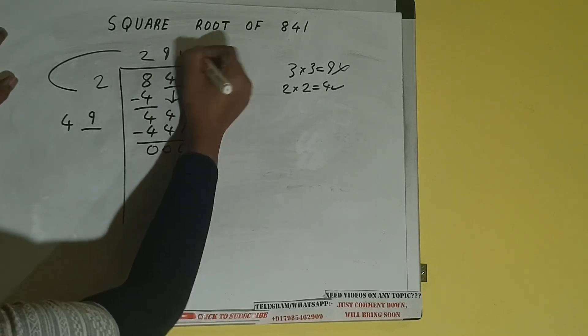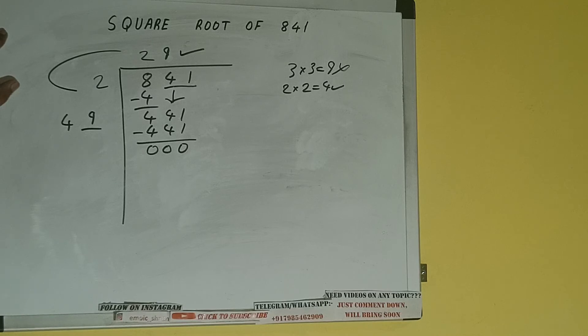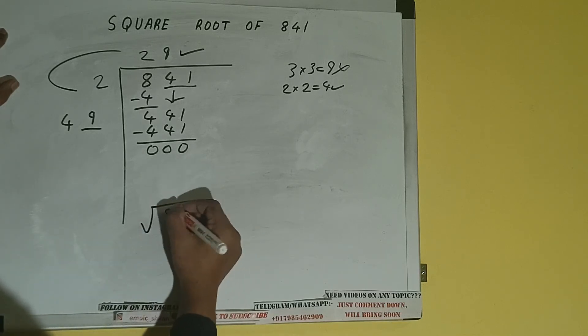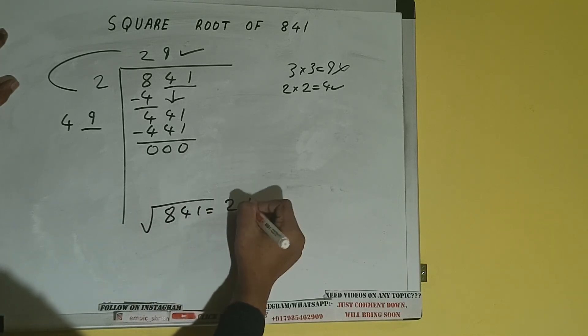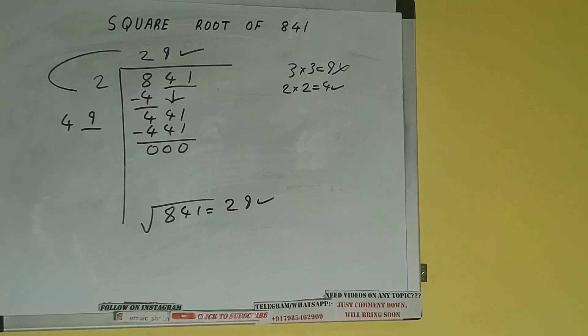Once we get 0, whatever is in the quotient will be the answer. That is 29. So square root of 841 will be 29. That will be the answer.